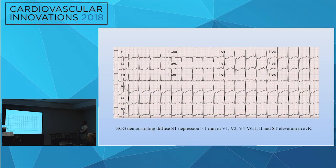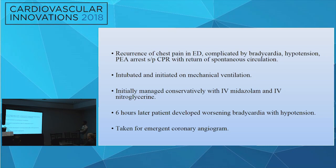After a certain time while she was in the ED and started developing recurrent chest pain, she became bradycardic, hypotensive, and had a PEA arrest, needing CPR with return of spontaneous circulation. She was intubated and initiated on mechanical ventilation. Initially she was managed conservatively with IV midazolam and nitroglycerin, but six hours later she developed worsening bradycardia and hypotension and was taken for coronary angiogram.